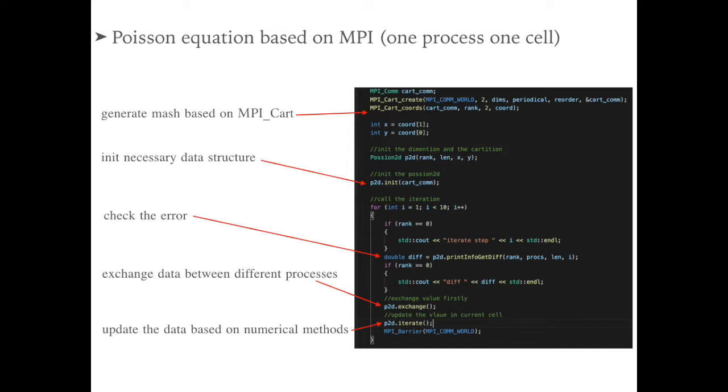For the next step, we start the while loop. In the while loop, we first compare the results in the current iteration step with the accurate values. We can jump out the iteration if the error is less than a specific threshold. Then, we exchange data between different processes. At last, we execute the iterate function and update the current cell value based on the specific numerical method and updated neighbor values.